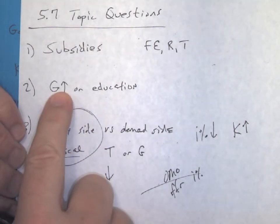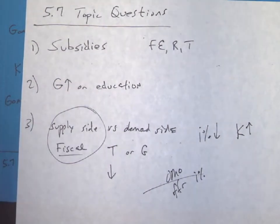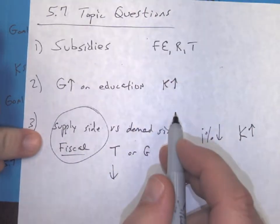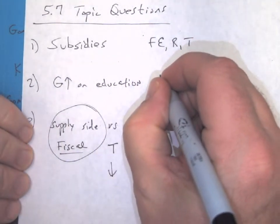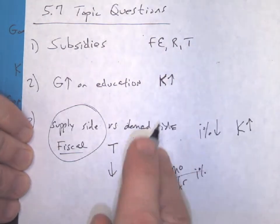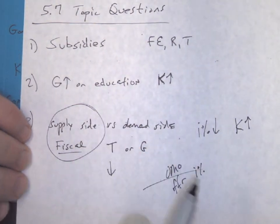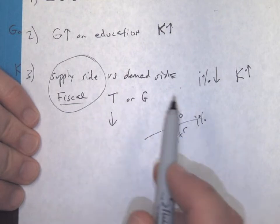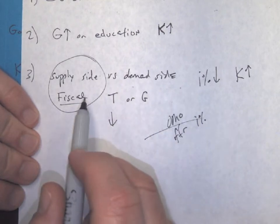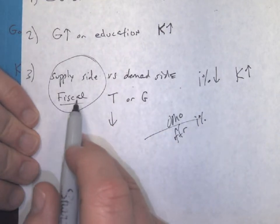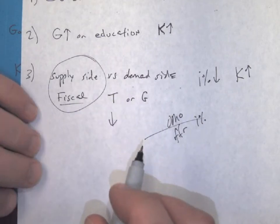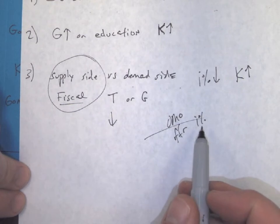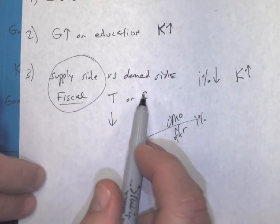The next one is government spending on education. This, of course, would lead to growth because our capital stock would increase. And if our capital stock is increasing, then we can have PPC shifting to the right. The third one is going to be supply-side fiscal policy versus demand-side. But the trick is they put the word fiscal policy. So that tells us it's not going to be something about open market operations, the Fed funds rate, or interest rates.